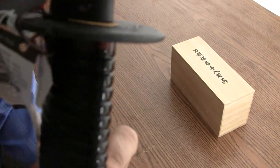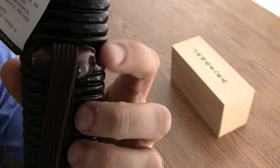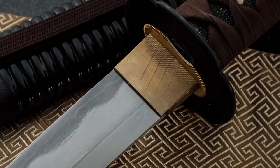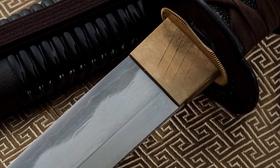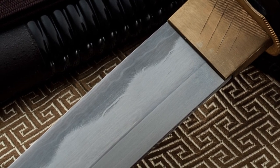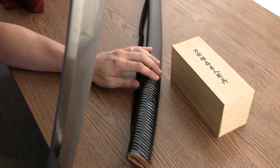Buffalo horn. Koiguchi, kurikata. The blade on this is a forged folded Swedish powder steel K120C high carbon steel.